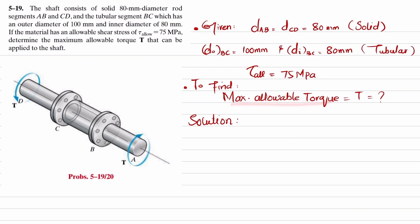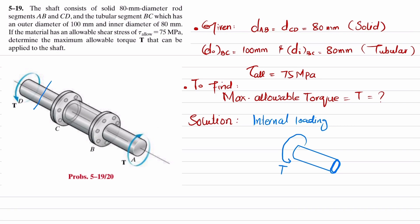We need to find the maximum allowable torque that can be applied on this system. The first step is to find the internal loading. We cut section CD and draw the free body diagram. At point D a torque T is applied, and at point C there is a reaction torque in the clockwise direction. So T_CD equals T.